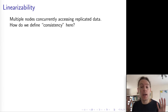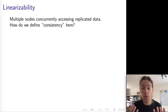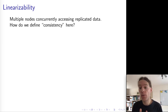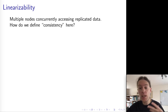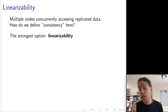I would now like to talk about a consistency model called linearizability. What we've seen so far with two-phase commits and atomic commitment is ensuring consistency in the face of crashes — ensuring that even if nodes crash, all nodes will either commit or abort a transaction. But we also have to worry about consistency in the face of concurrency: what if multiple nodes are concurrently reading and writing some data? How do we ensure those operations are consistent with each other? This is what linearizability is about.